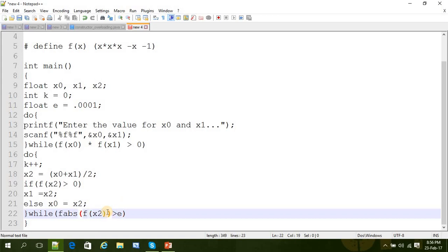And here, while absolute value of f(x2) is greater than e, then this loop will rotate again. So if the value of f(x2) is almost 0, then the loop is going to stop here.